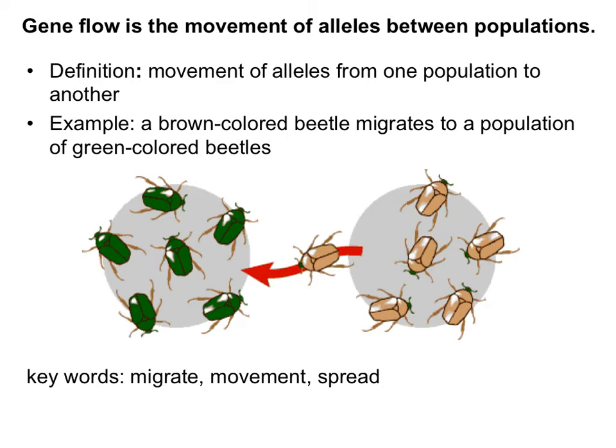These next concepts are evolutionary terms you need to know how to define and recognize. The first is gene flow — the movement of alleles from one population to another. This picture shows two separate populations of beetles in different areas. A brown-colored beetle migrates to a population of green-colored beetles, and now these brown alleles enter this population — the genes are flowing from one population to another. Keywords to look for would be migrate, movement, and spread.